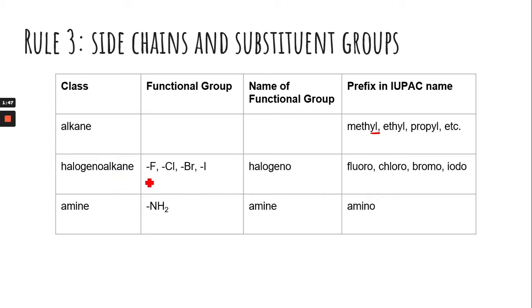Halogens can also be a side group. And so you would put an O at the end. Instead of an IDE, it's an O. So fluoro, chloro, bromo, iodo.